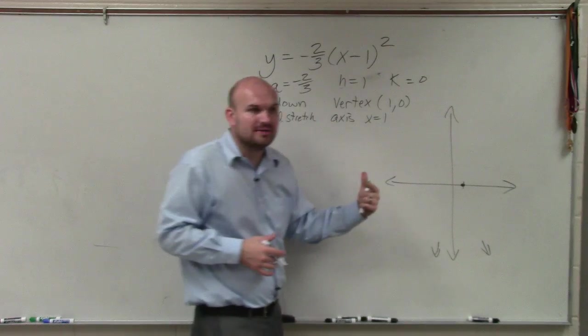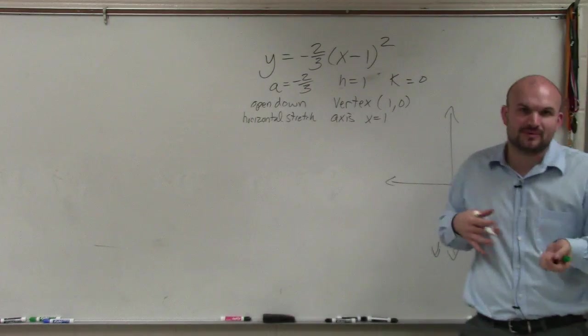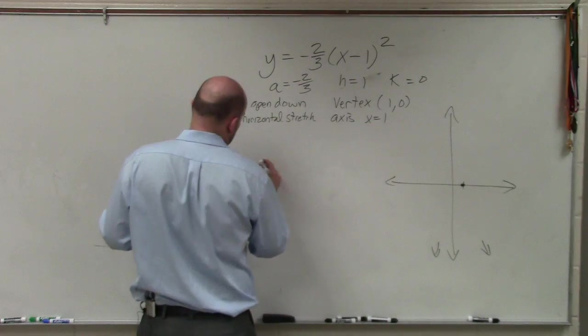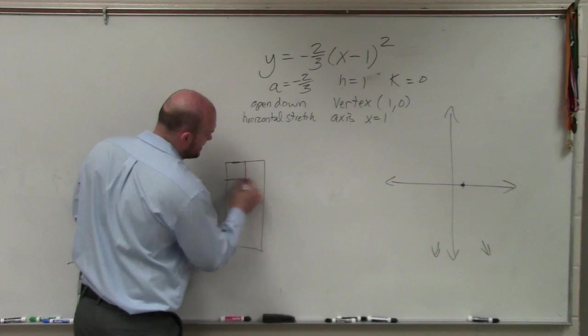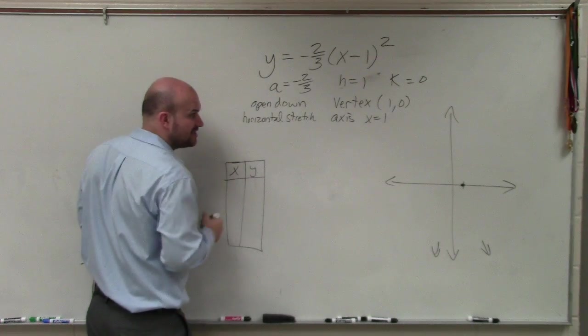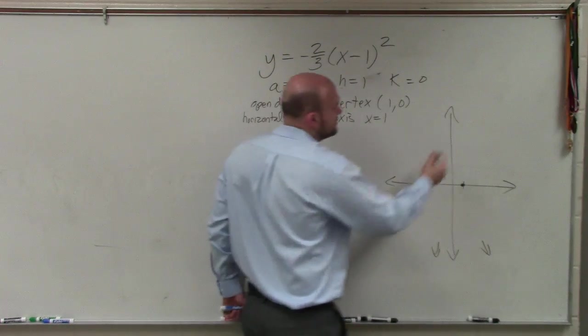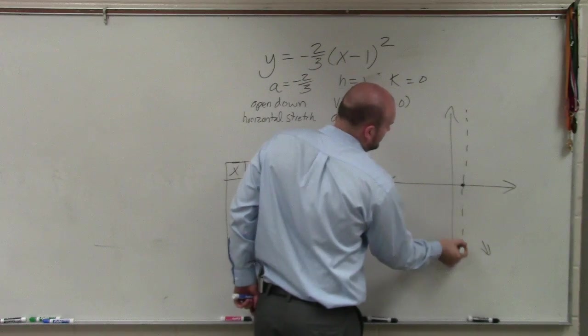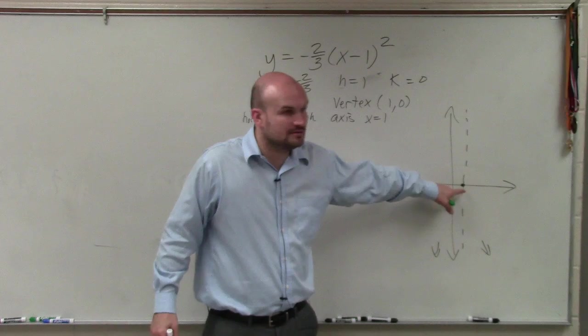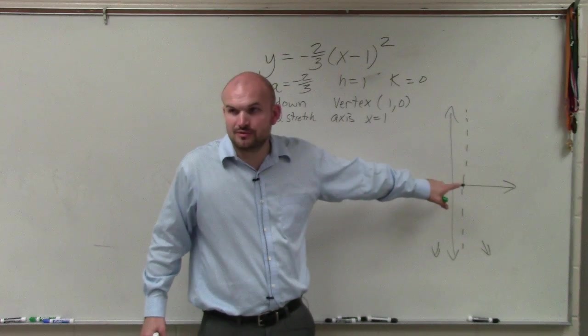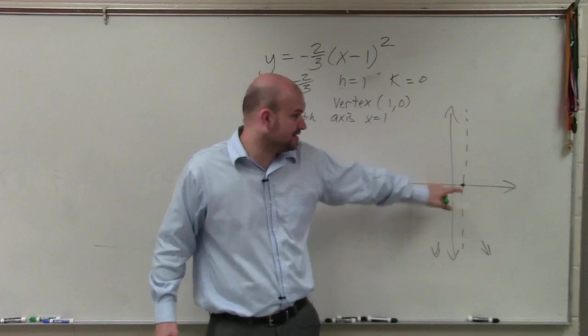So when you have a problem like this, to get started, the easiest way to understand them is to go back to a table of values. Now, just like standard form, we don't need to choose a million values. We just want to choose values to the left and to the right. And I always want to choose values that are going to be right next to my axis of symmetry and towards 0.